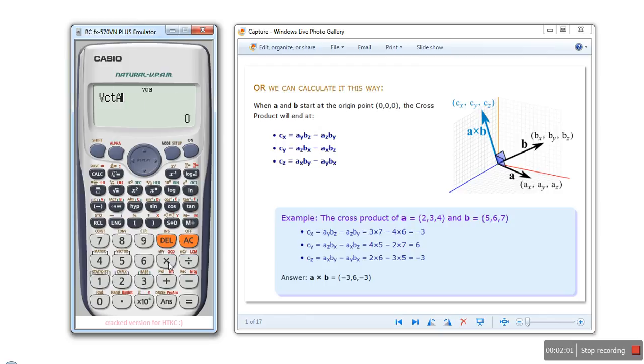Now we will multiply, and again shift vector, we need to select vector B, then press equal sign. It will give us minus three, six, minus three, which is equivalent to this one.